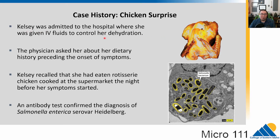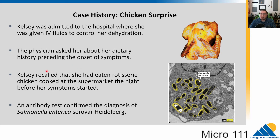We've seen osmosis and things like that before. The physician is going to ask questions — the gastrointestinal symptoms make us think food — so the physician asks about what she's been eating and when the symptoms came on. She says she ate a rotisserie chicken cooked at the supermarket the night before her symptoms started. So they're going to do an antibody test, and they suspect that this is Salmonella enterica.